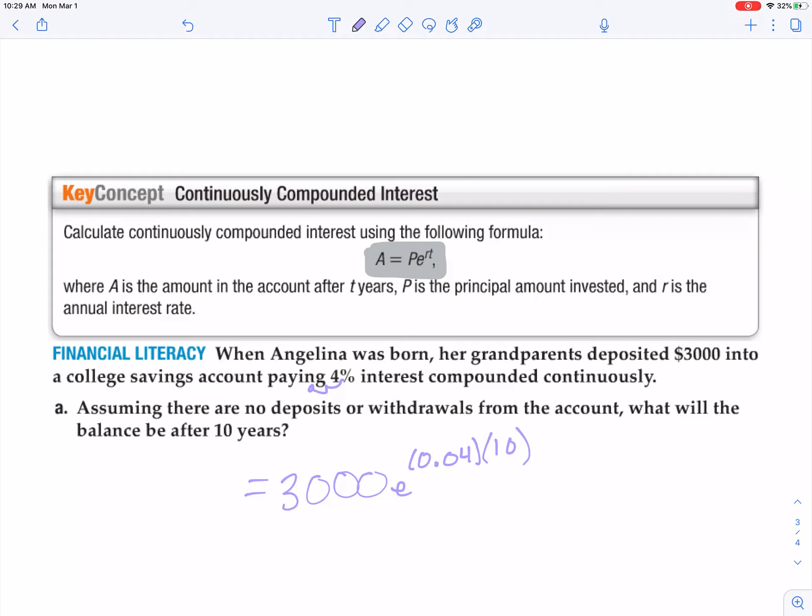And then I close the parentheses. Since this is money, I'm going to round to the nearest penny. So it's $4,475... and let's see, it looks like it rounds down, so it would be $4,475.47.